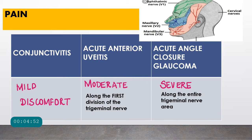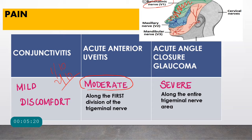Regarding pain: in conjunctivitis, patients have only mild discomfort — about one or two out of ten on a pain scale. In acute anterior uveitis, pain is moderate and spreads along the first division of the trigeminal nerve (V1). In acute angle closure glaucoma, pain is severe — about nine out of ten — radiating across the entire trigeminal area, including the jaw, teeth, and temples.